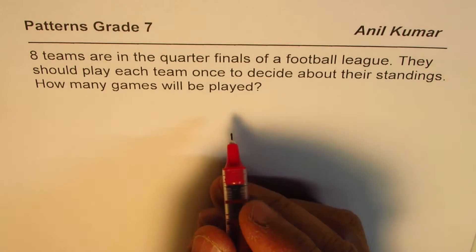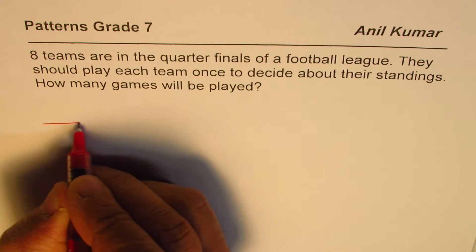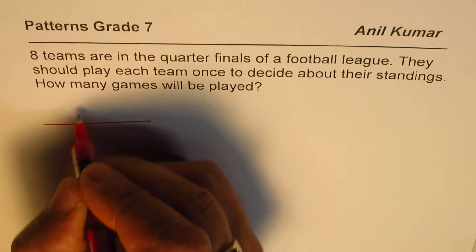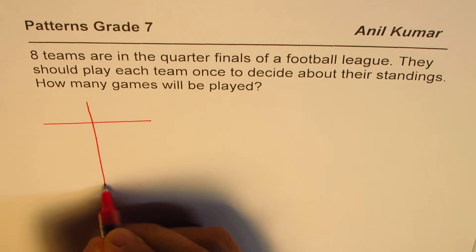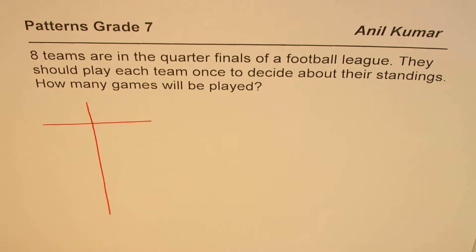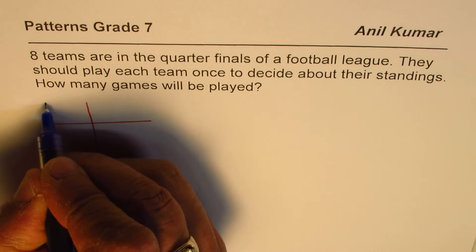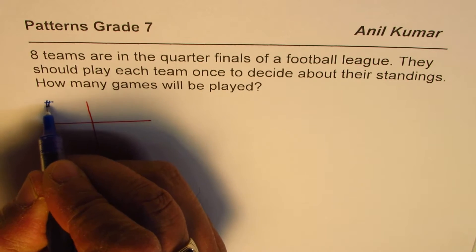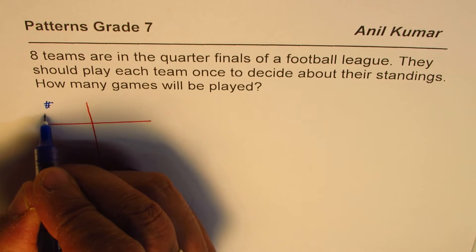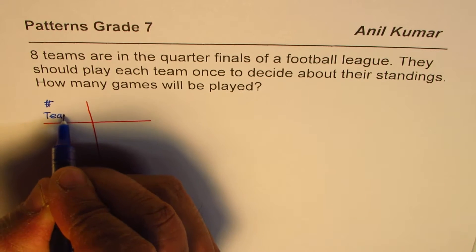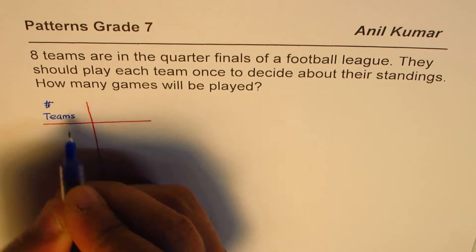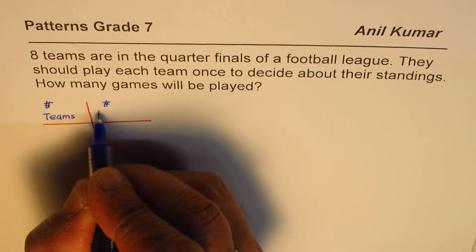To answer such questions, we need to make a table — a T-chart table — to figure out how many games are being played with respect to number of teams. We'll make two columns: the input is number of teams, and the output is number of games.